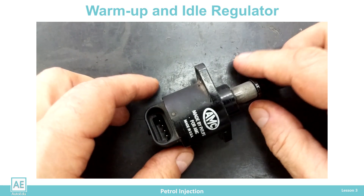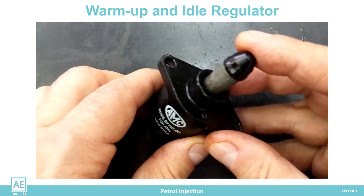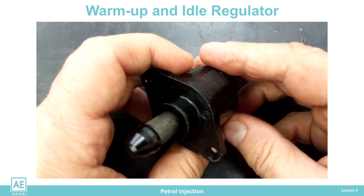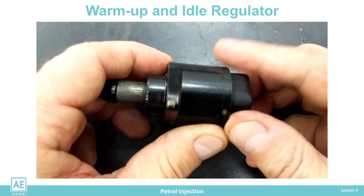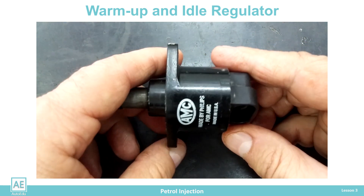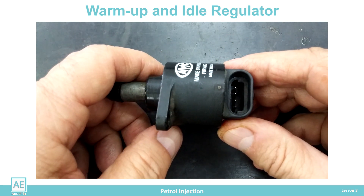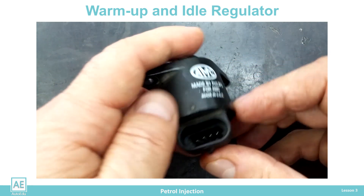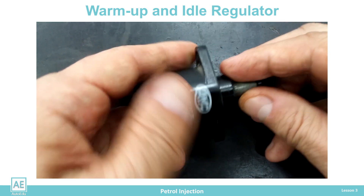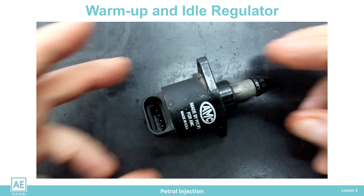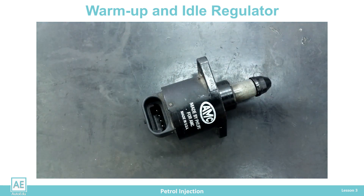A new regulator was developed as a specific direct current electric motor with two coils of opposite magnetic orientation. The direction of rotation of the regulator defines the opening or closing of the bypass line.